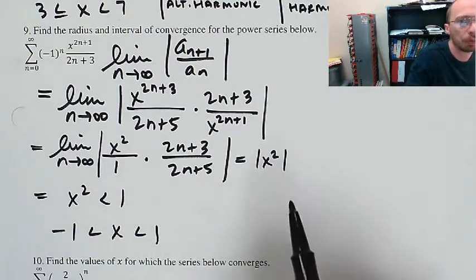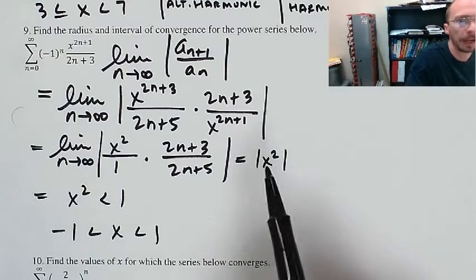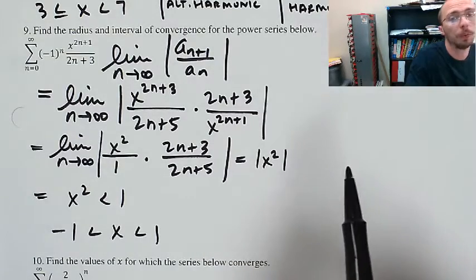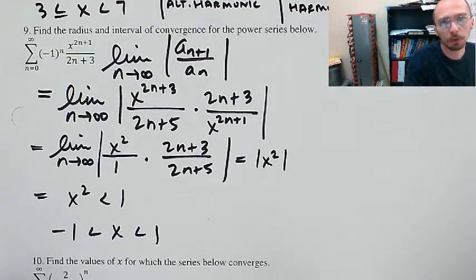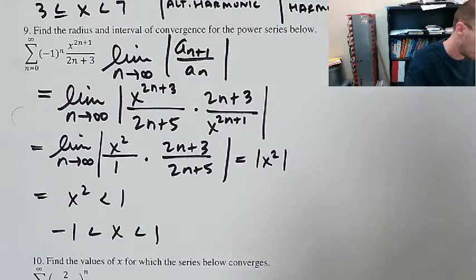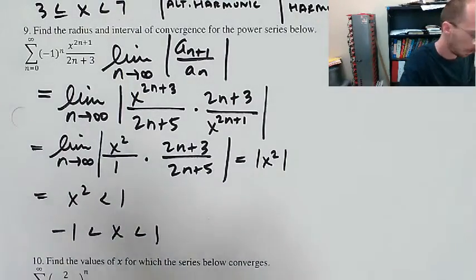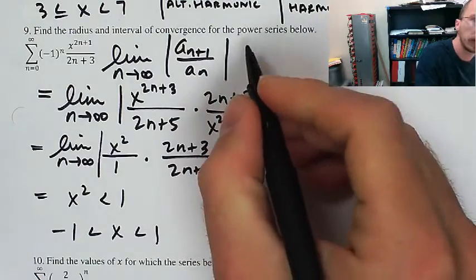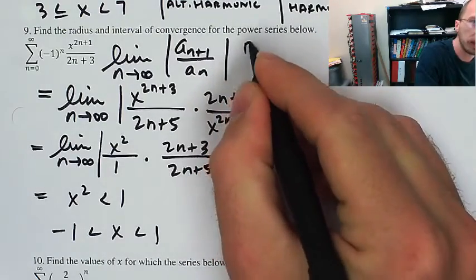Now, if it had been x squared over 4 less than 1 that would be more interesting, but we'll deal with that in a different example. So I know the radius equals 1, and I need to check negative 1 and 1.